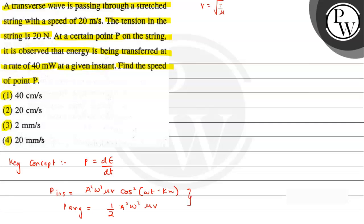We can write average power, which we have been given. First of all, we need to find mu's value. What will be mu's value? It will be T by v squared, from this expression.